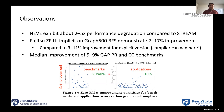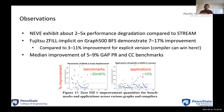Overall, if you segregate between benchmarks and applications: benchmarks show about 20 to 40% improvement depending on the graph benchmark or STREAM, which is great. For graph applications, it was only about 10%. We didn't try regular vectorizable applications, but I think there will be much more there.